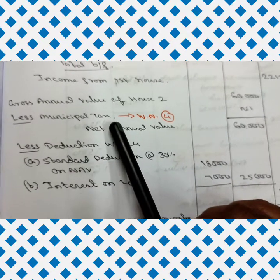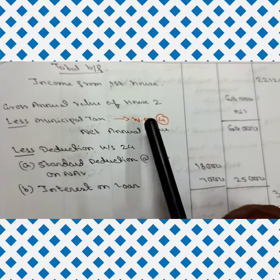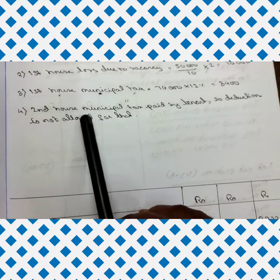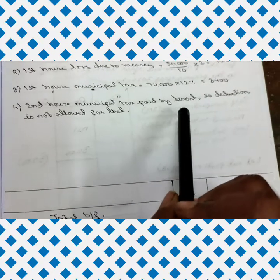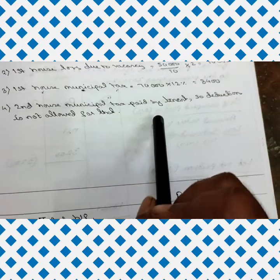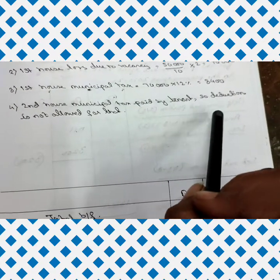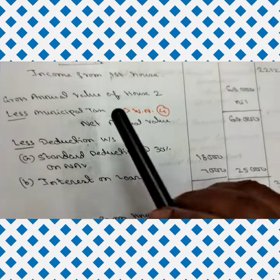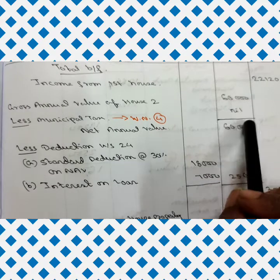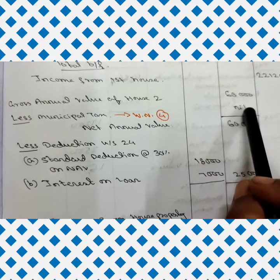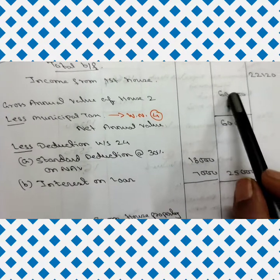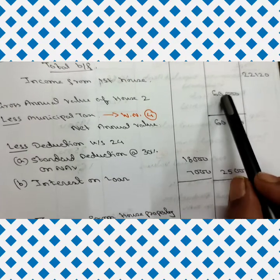For municipal tax on house two (Working Note 4): municipal tax is paid by the tenant, so no deduction is allowed — municipal tax deduction is nil. Therefore, Net Annual Value equals Gross Annual Value, which is 60,000.